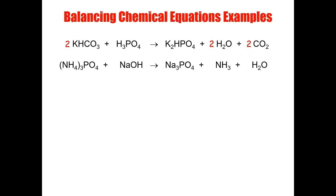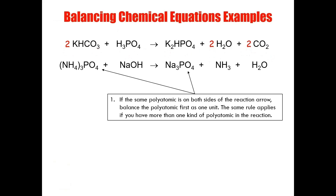On to our second example. Our second example again shows two different types of polyatomic ions. We have the ammonium ion here and the phosphate ion on both sides. Because the ammonium ion is only on one side of the reaction arrow, we cannot treat it as a single unit. But we can treat the two phosphate ions as a single unit based on rule number one. Looking at the phosphate ions, I only have one phosphate ion on both sides — again, phosphate self-balances — so it brings us to rule number two.